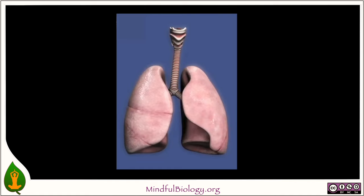We can use this animation to look at the lungs from various perspectives. Here we see the right and left lung from the front. The right lung is divided into three lobes and the left into two. The two lungs are approximately the same size and have various indentations that accommodate organs such as the heart in the center and the liver below.